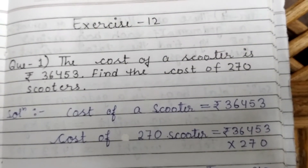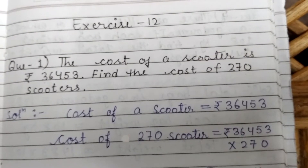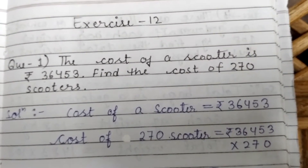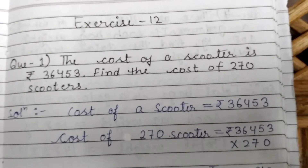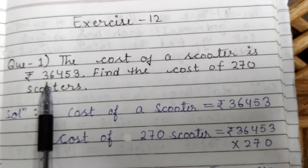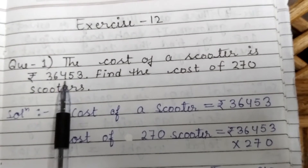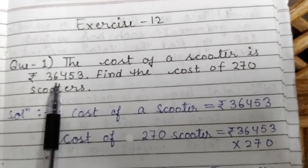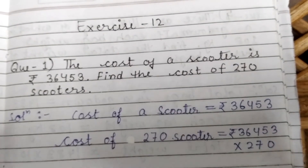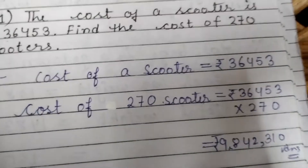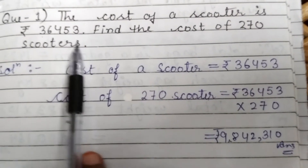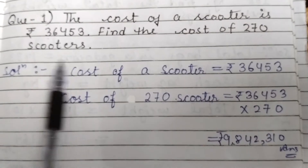Hello students, how are you? In this video I'll explain Exercise 12, Chapter 4. My first question is: the cost of a scooter is 36,453. Find the cost of 270 scooters.